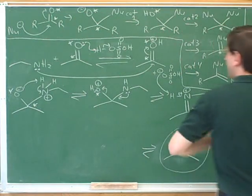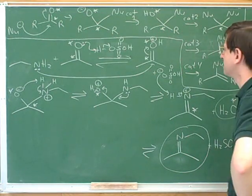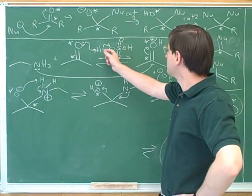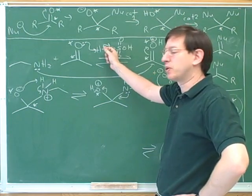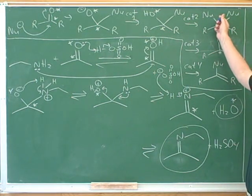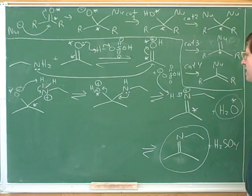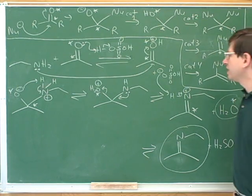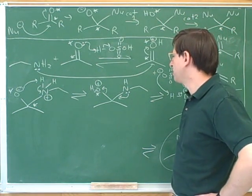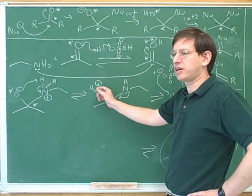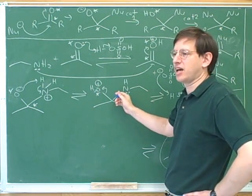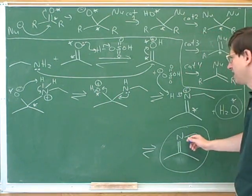I think you guys did a good job on that mechanism. The only problem was maybe forgetting that the first step requires protonation. After that, you can see how similar this is to Category 2 — it's just that instead of having a second alcohol molecule replace the carbonyl oxygen, we have this nitrogen attack a second time using another lone pair.